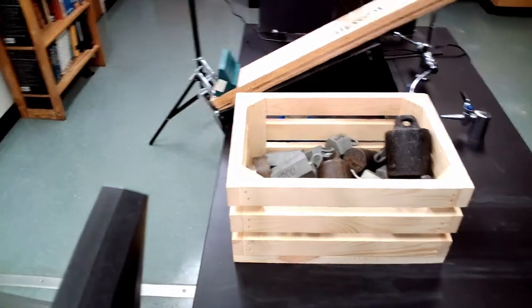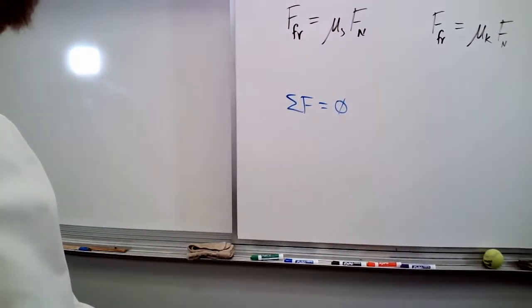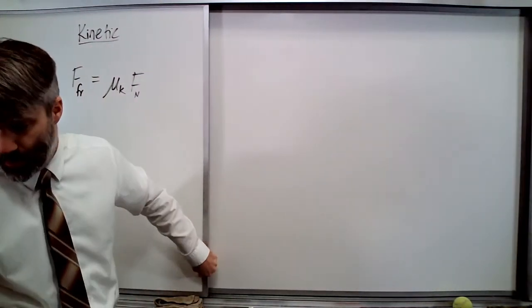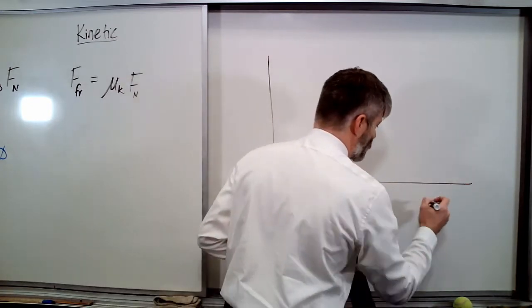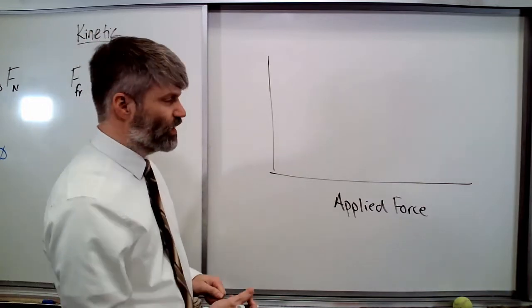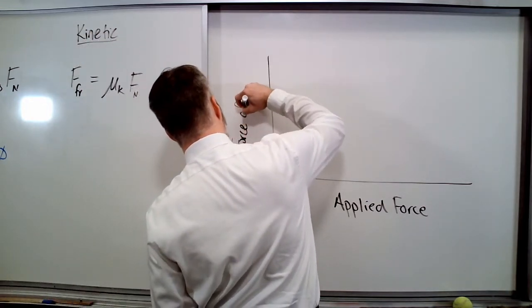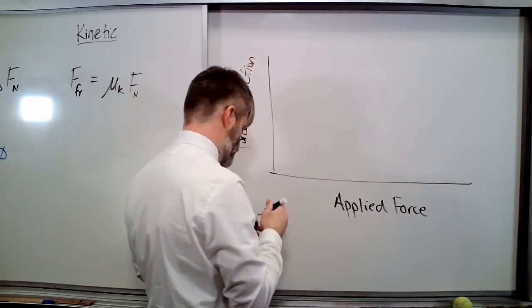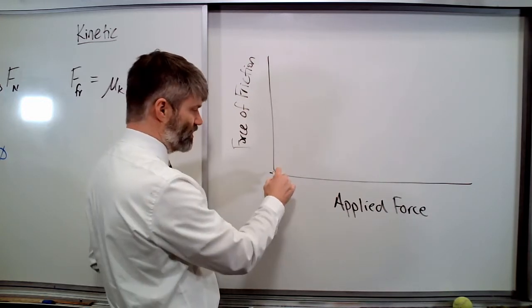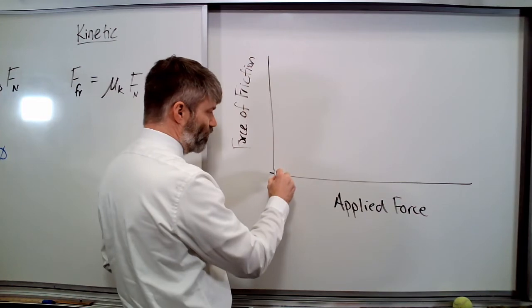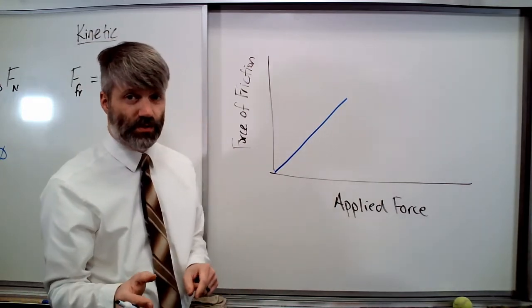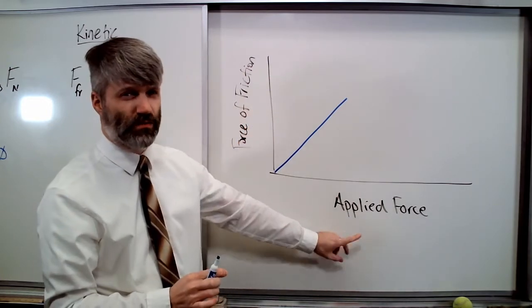Let's take a look at that again, first graphically. If we graph the applied force — in this case the force of my push — to the force of friction, we will see that at first the force of friction very much responds to my force. It is a one-to-one relationship. The slope of that line should be one. This is the force of friction versus the applied force, not the normal force.